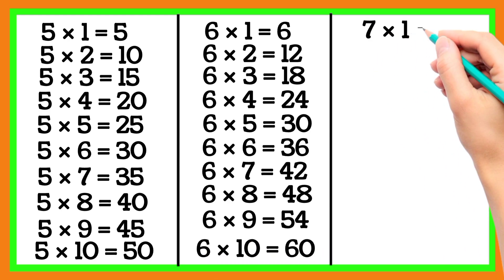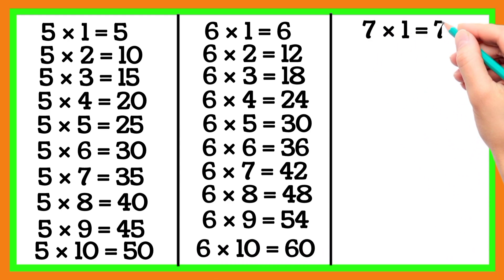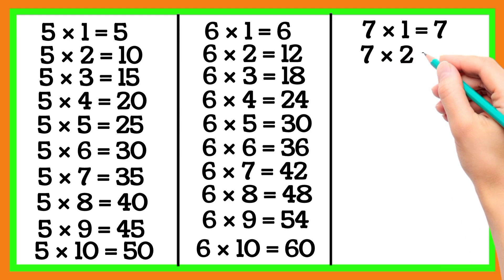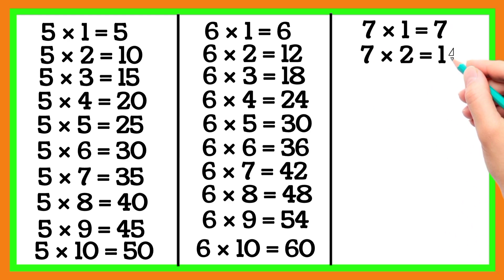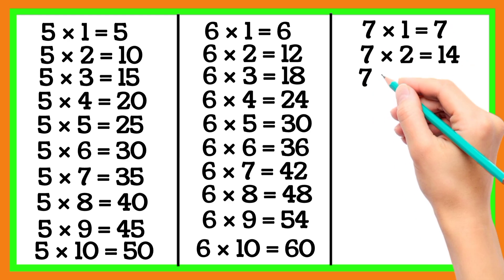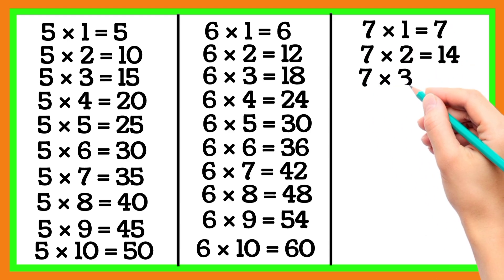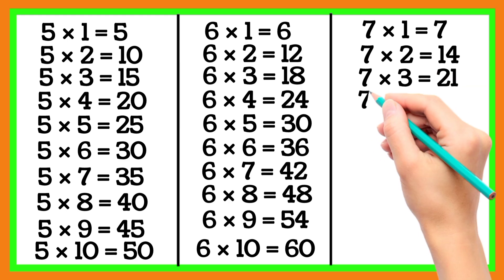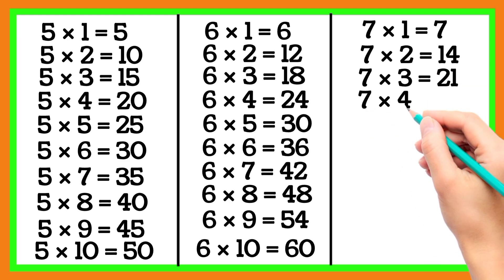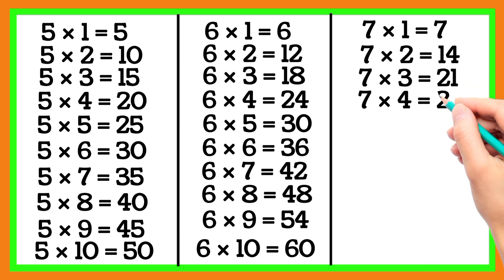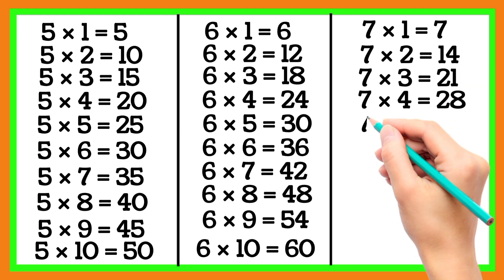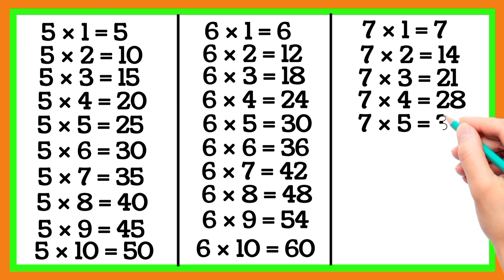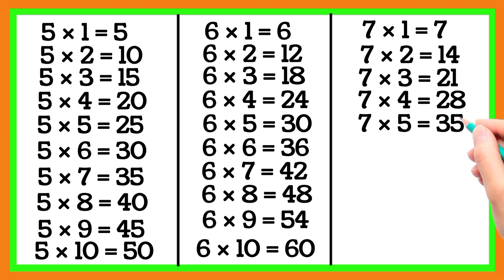7 1 is 7, 7 2 is 14, 7 3 is 21, 7 4 is 28, 7 5 is 35.